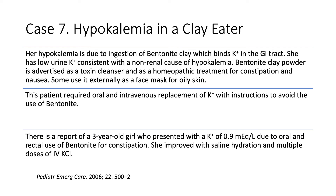Her hypokalemia is due to ingestion of bentonite clay, which binds potassium in the GI tract — essentially acting as a potassium binder. The low urine potassium confirms this is non-renal GI loss of potassium. Bentonite clay powder is advertised as a detox agent, cleanser, remedy for constipation and nausea, and even as a face mask for oily skin. This patient required both oral and intravenous potassium replacement and was instructed to avoid bentonite. There is a literature report of a 3-year-old girl with a potassium of 0.9 from oral and rectal bentonite use, who recovered with saline hydration and IV potassium chloride.